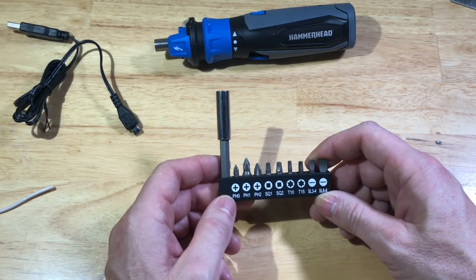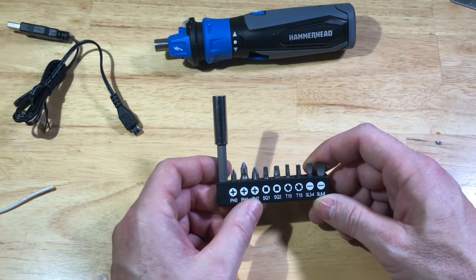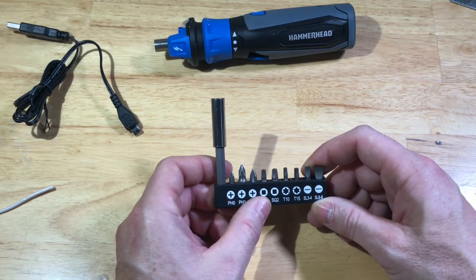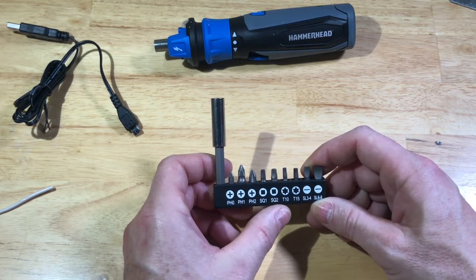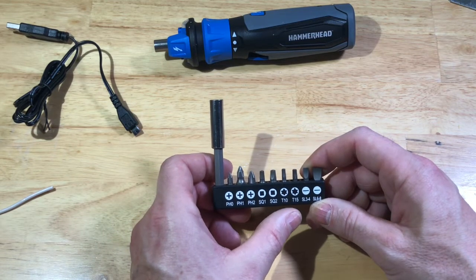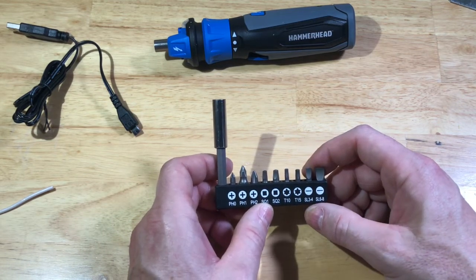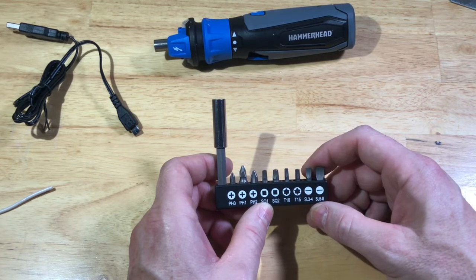It has Philips 0, 1, 2, square 1, square 2, Torx 10, Torx 15, and slotted 3 and 4.